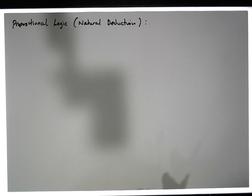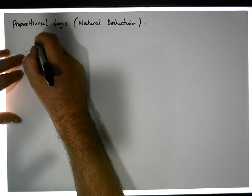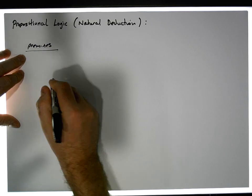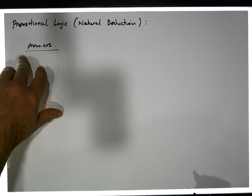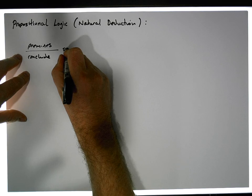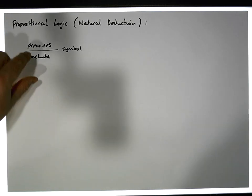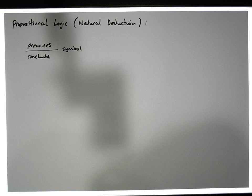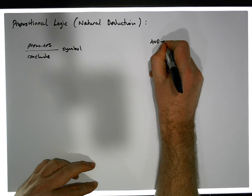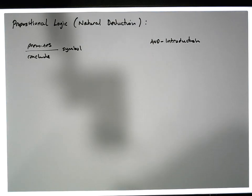These rules have a particular form. They have premises written above and the things we're going to conclude from those premises written below, along with the symbol used to represent this particular rule. This video is looking at AND introduction and AND elimination.